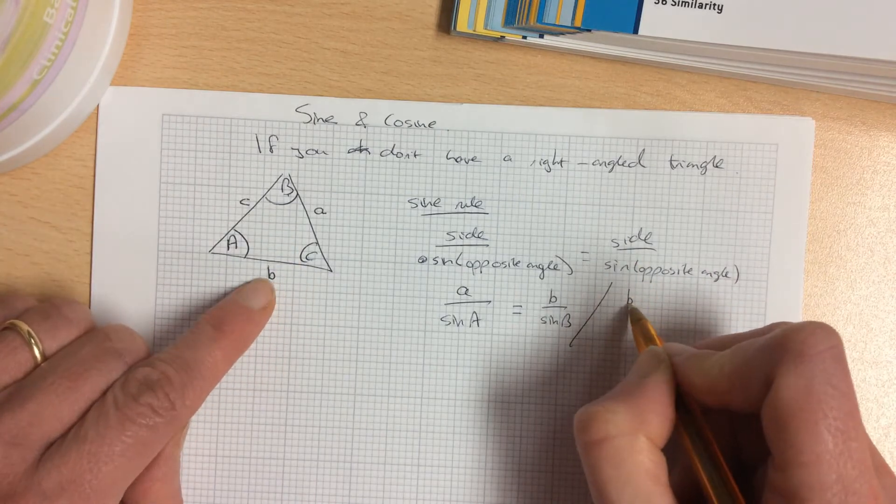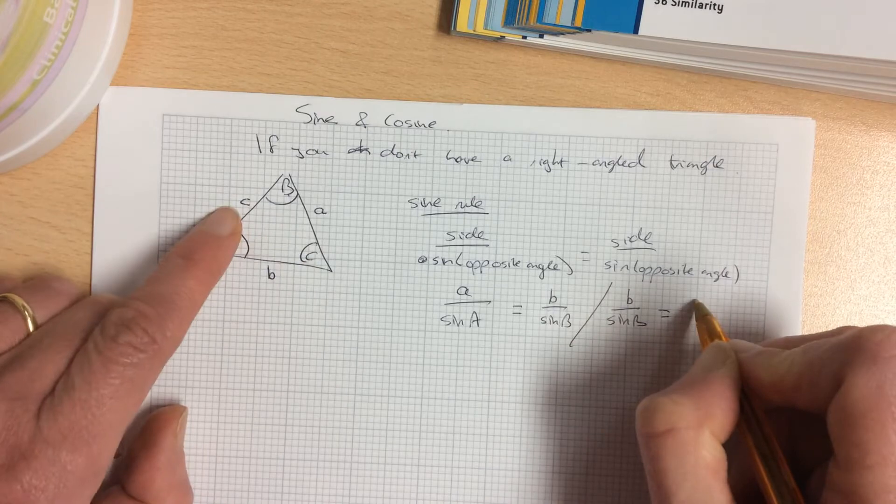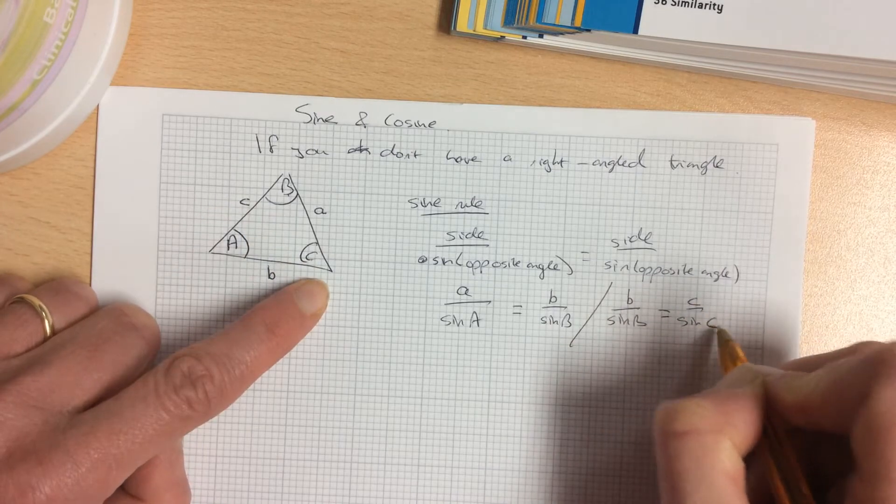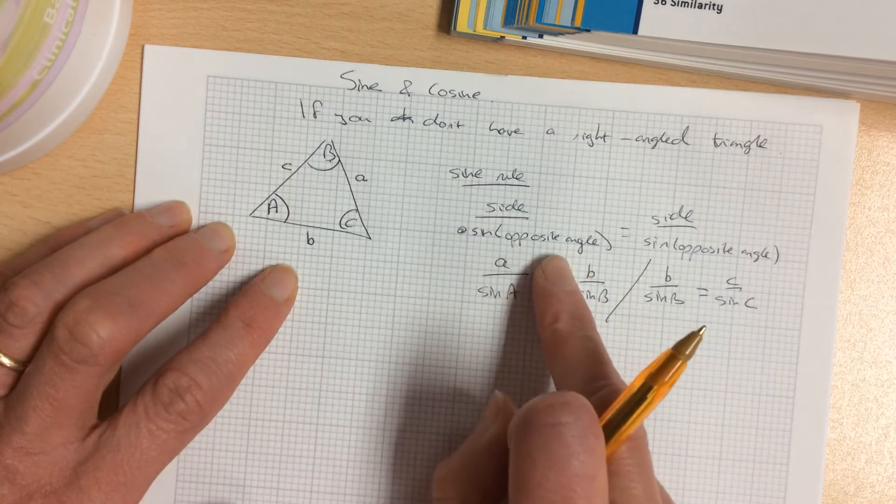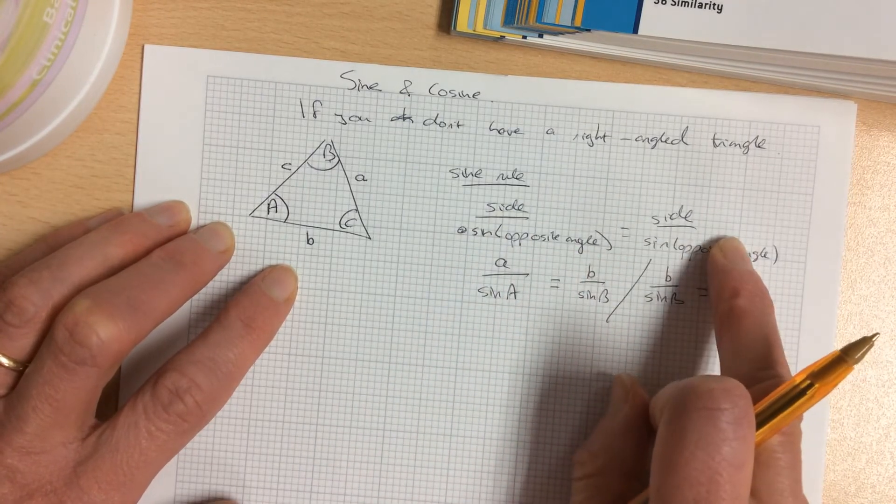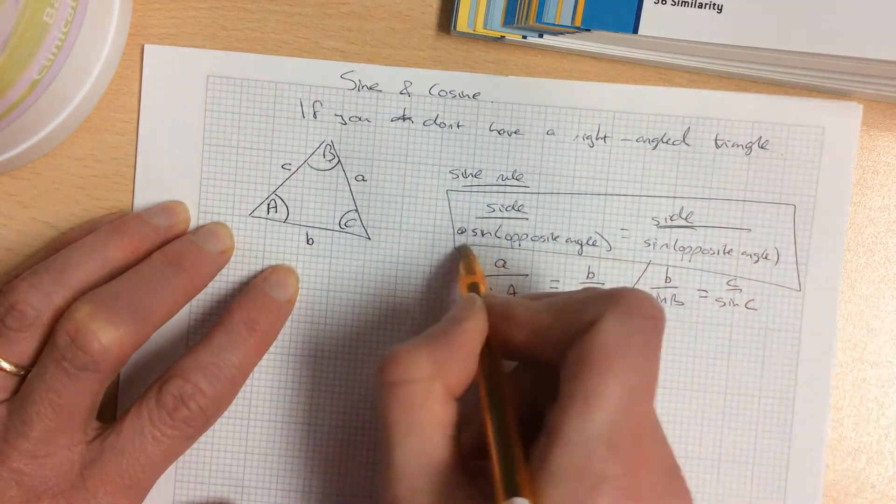Or I could say side b over sine B equals side c over sine C. It doesn't matter which way, as long as it's a side over sine the opposite angle equals another side over sine the opposite angle. That's the sine rule.